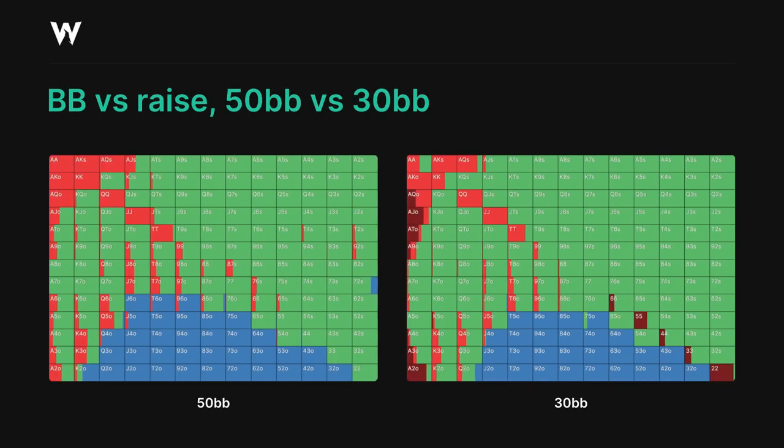When we drop from 50 big blinds down to 30 big blinds, a lot starts to change. We now have both a 3-bet jamming range and a non-all-in 3-bet range, the former of which is constructed in a very familiar way, containing mostly small pairs and offsuit aces. We're also now starting to trap with kings plus at some rate, to protect what is now a fairly weak calling range, and because we can still easily stack off with these hands post-flop on most boards.